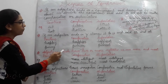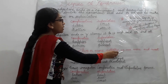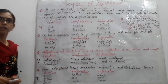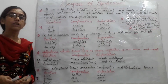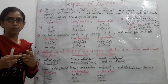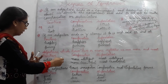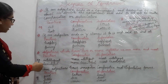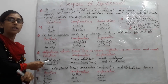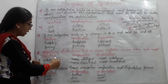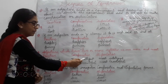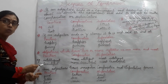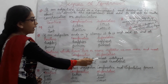Next rule: adjectives which have two or more syllables — we use 'more' and 'most' to make them comparative or superlative. Agar kisi adjective mein two ya two se zyada syllables hote hain, toh us adjective mein comparative banane ke liye 'more' aur superlative banane ke liye 'most' ka use karte hain. For example, 'intelligent' — more intelligent, most intelligent. 'Beautiful' — more beautiful, most beautiful.